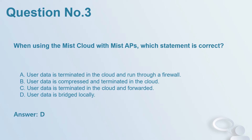Question number 3: When using the Mist cloud with Mist APs, which statement is correct? A. User data is terminated in the cloud and run through a firewall. B. User data is compressed and terminated in the cloud. C. User data is terminated in the cloud and forwarded. D. User data is bridged locally. Answer: D.